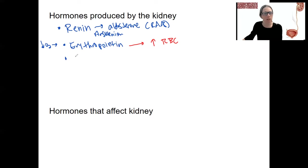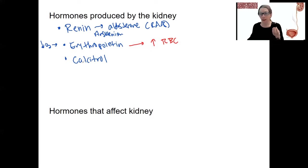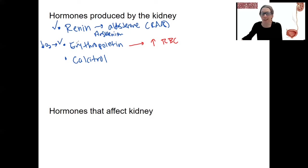Calcitonin is involved in regulating calcium levels. Opposed to parathyroid hormone, it is going to be released in response to high calcium. Calcium regulation emphasizes the importance of the kidney in that process. So we've talked about renin and EPO before — EPO is produced by the kidney, and now you know a little more about it.